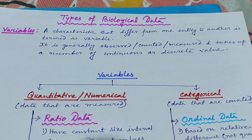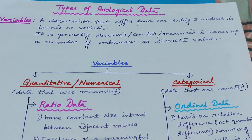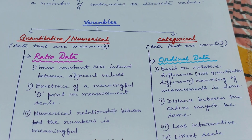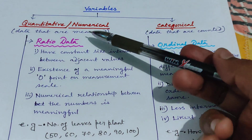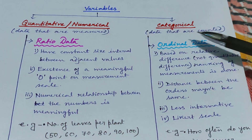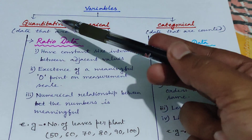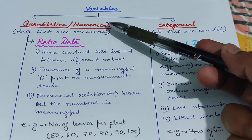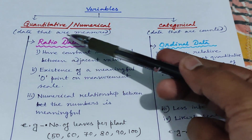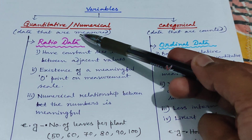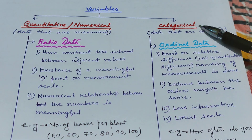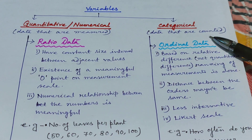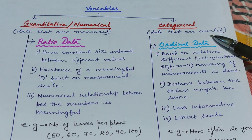How many types of variables can there be? There are four major types, and we can classify them into two major groups. One is the quantitative or numerical group, and the other is categorical data. Quantitative data are actually measured and quantified, whereas categorical data are qualitative — meaning they are not measured but counted.